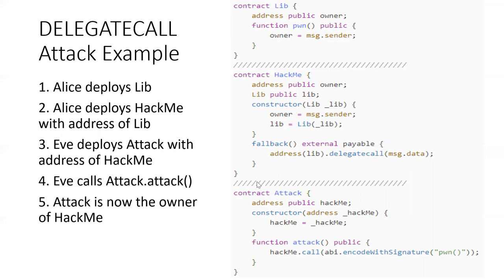Eve is going to call attack, and her attack contract is going to allow her to interact with hack me. She's basically calling a function of hack me — specifically the fallback function. She's going to send in a message that will then piggyback along on this delegate call message and do stuff over in the library. This will allow her to take over the hack me contract, essentially.